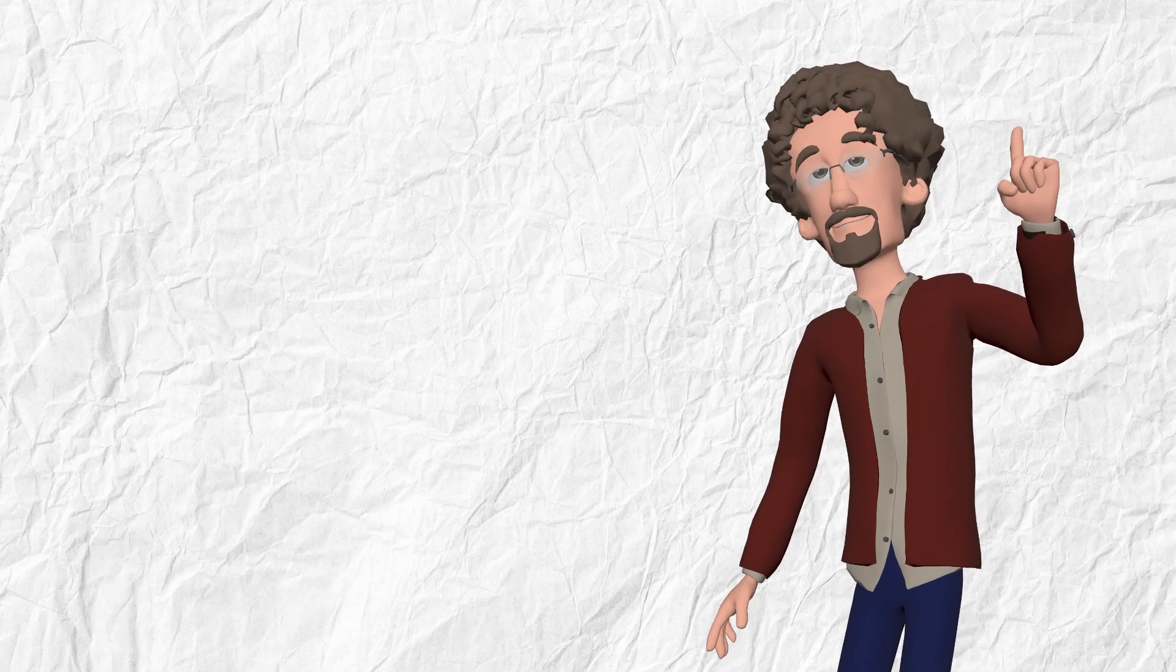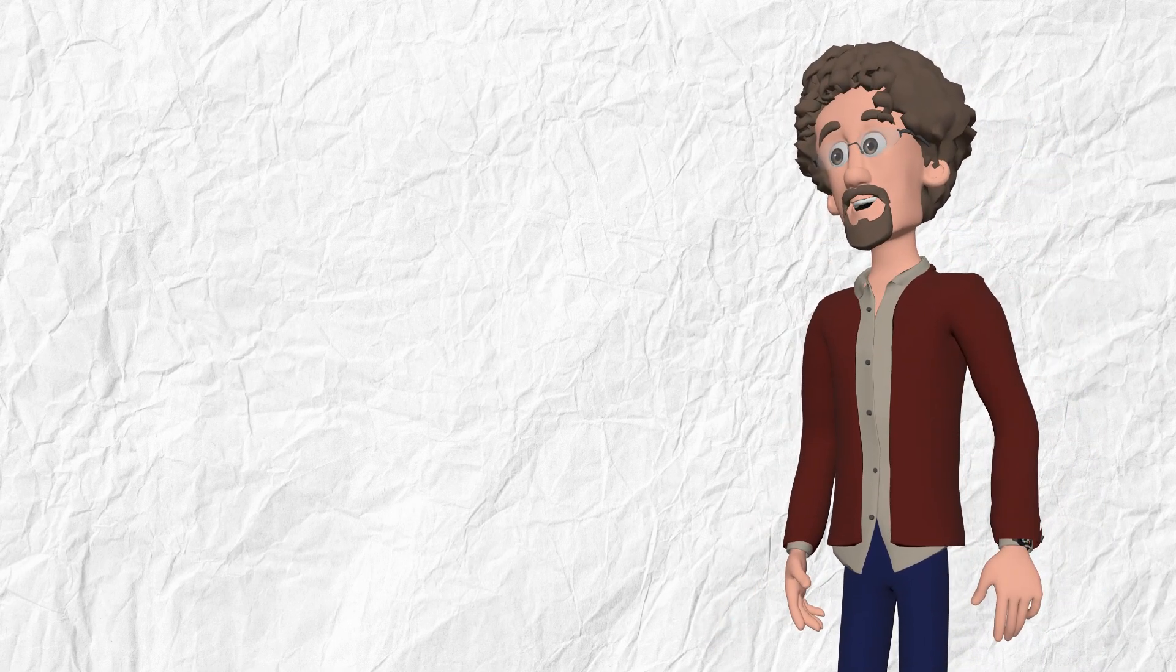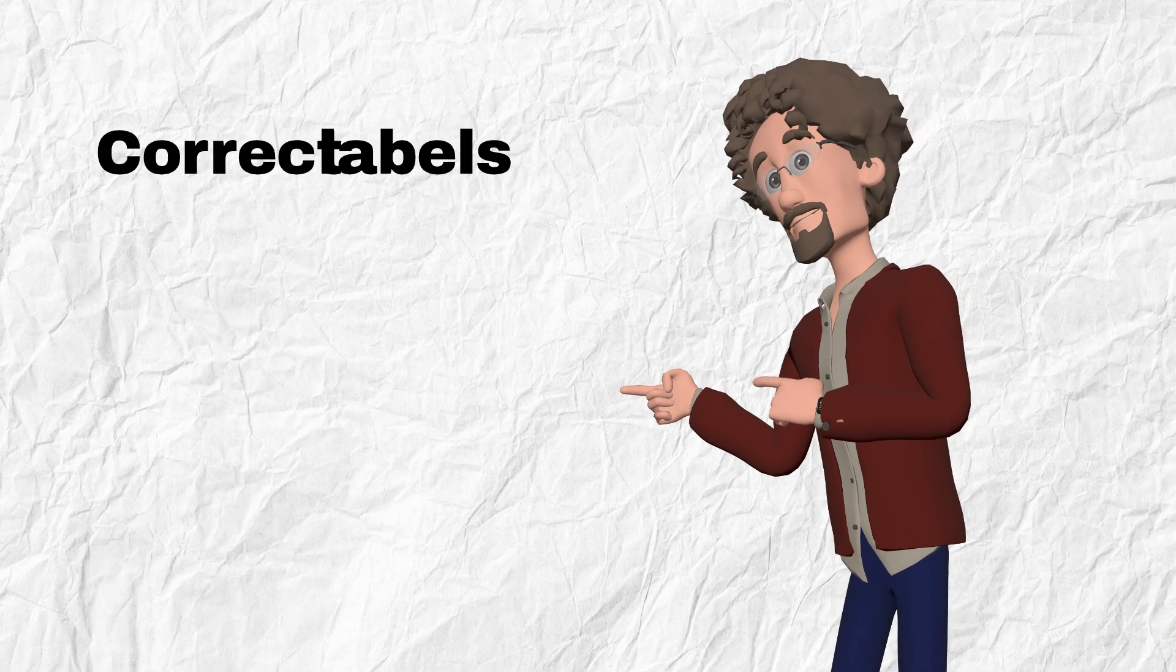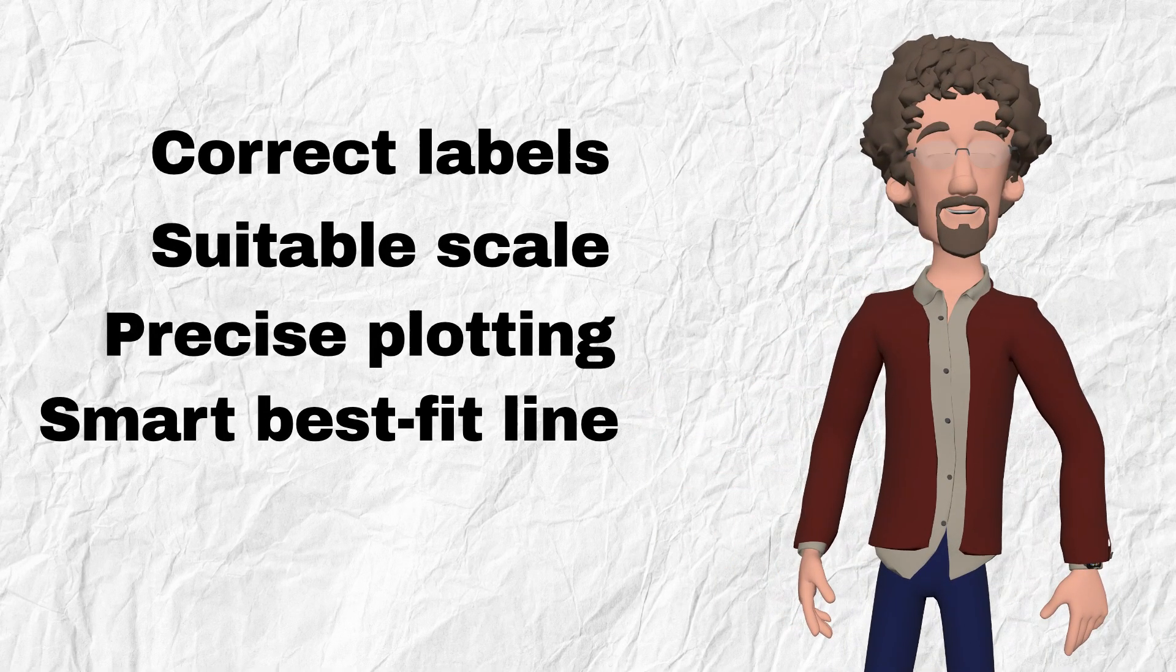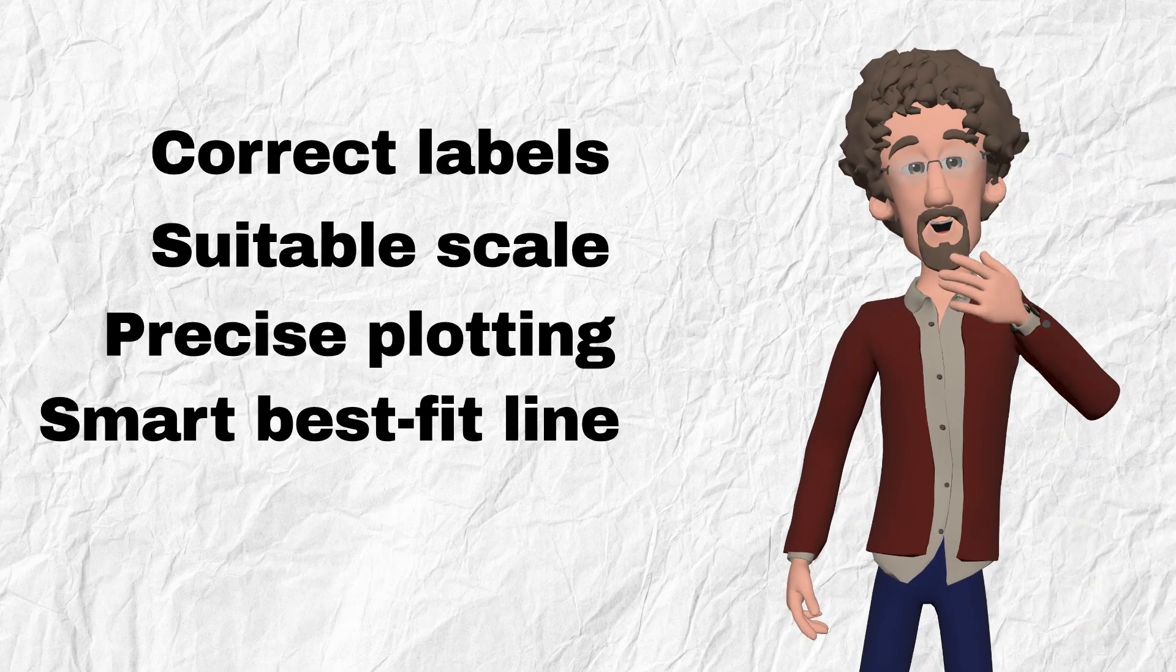In every physics graph question, the examiner is looking for exactly four things: correct labels, suitable scale, precise plotting, smart best fit line. Let's hit every mark, straight to it.